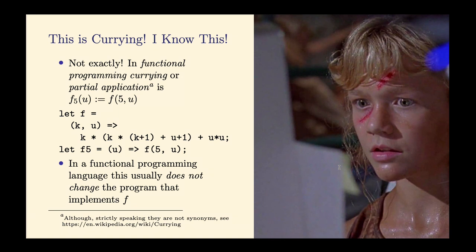You may think that what I'm talking about is just another word for something familiar to functional programmers — currying, or partial application. Those two are sometimes mixed up. But there is a difference between partial application and partial evaluation.